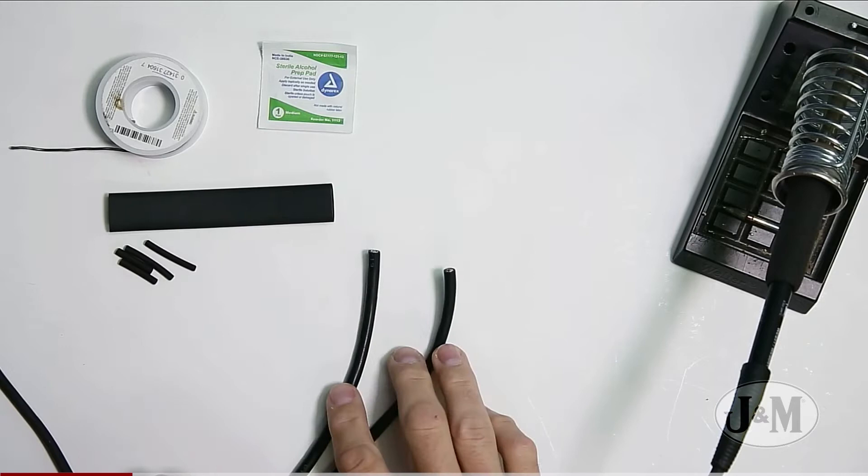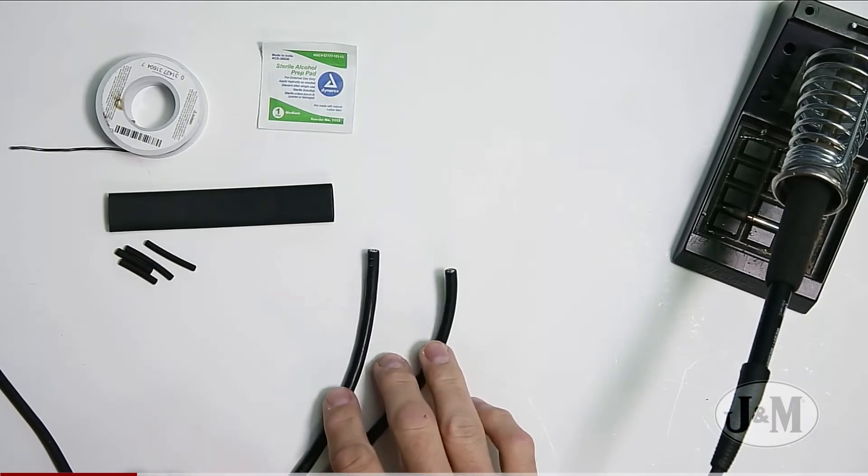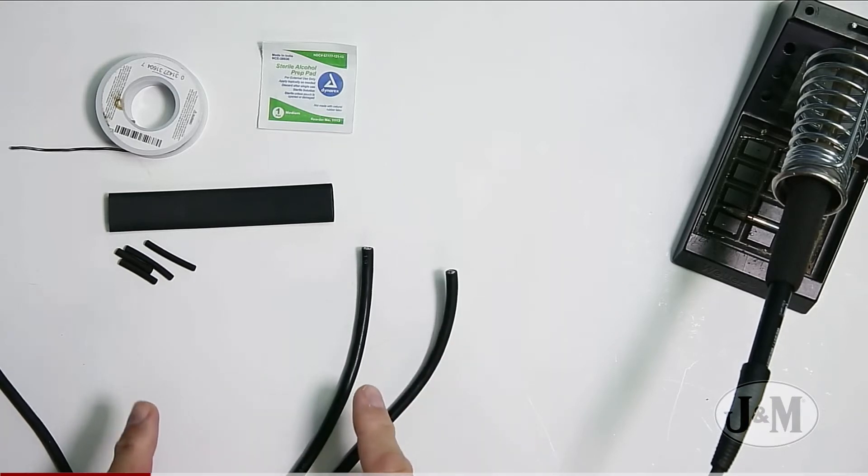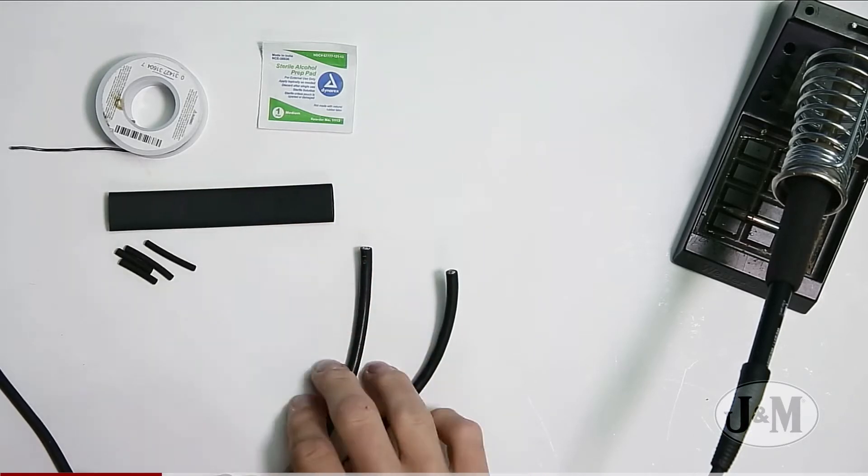You can't splice a cable, specifically a scale cable, with just butt connectors. Even the heat treated butt connectors that have got the same glue in it, it doesn't do the same. It really needs to be soldered together and then used heat shrink on top of it.